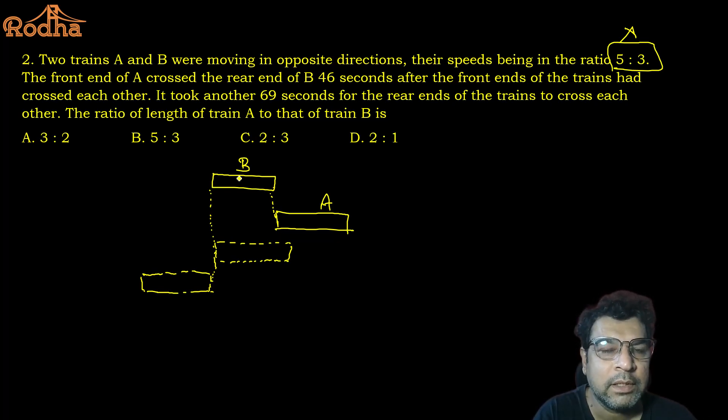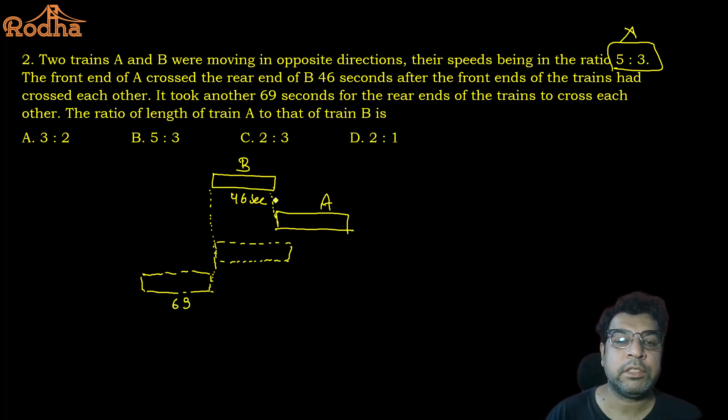In case of constant speed, distance ratio is equal to time ratio. So when the situation goes from this to this, what is the distance traveled? This much. So I can say this distance is traveled in 46 seconds. And then from this scenario to the scenario in which distance covered is this much, that is 69 seconds. In the first scenario, the distance covered is the length of B. In the second scenario, it is length of A.